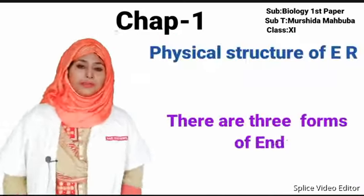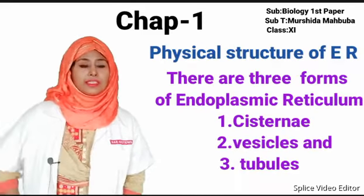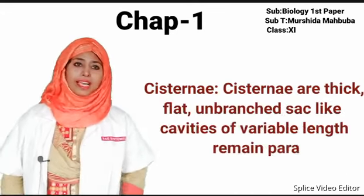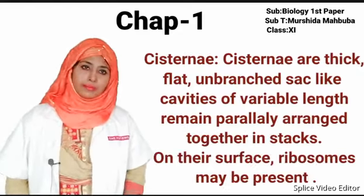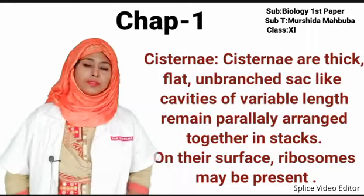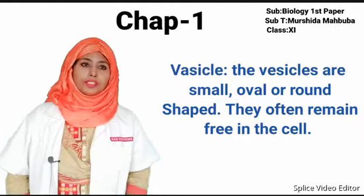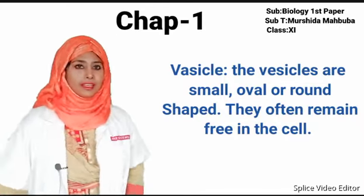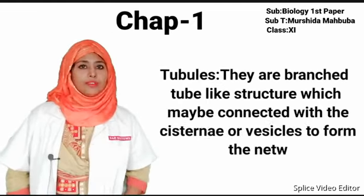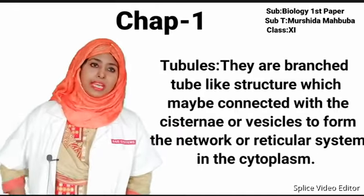Physical structure of endoplasmic reticulum: It consists of three parts — cisternae, vesicles, and tubules. Cisternae are thick, flat, unbranched, sac-like cavities of variable length, remaining parallelly arranged in stacks; ribosomes may be present on their surface. Vesicles are small, oval, or round-shaped and often remain free in the cell. Tubules are brass tube-like structures which may be connected with the cisternae or vesicles to form the network or reticular system in the cytoplasm.